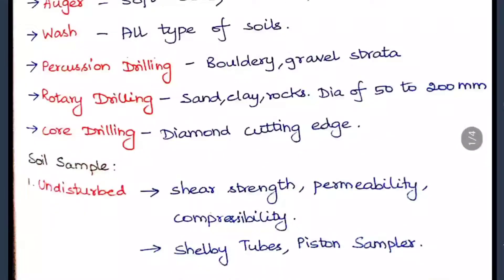Soil samples are categorized into undisturbed and disturbed. Undisturbed soil will not lose its shear strength, permeability, and compressibility. To check these characteristics, an undisturbed sample must be taken. Undisturbed samples can be collected using shell and bite tubes and piston samplers.